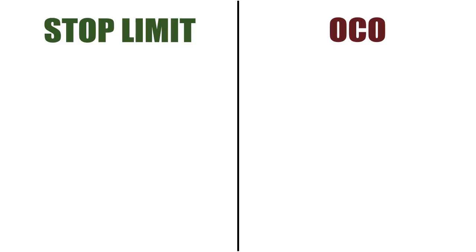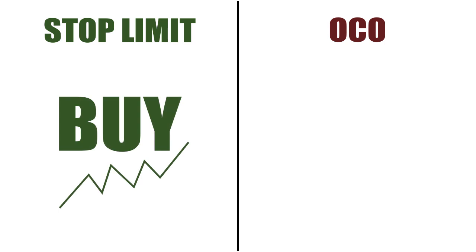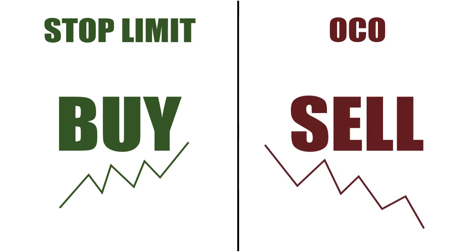The question is: which order form should you use to place your orders — the stop limit or the OCO order? I personally use both of them. If I want to enter the market and buy at a specific price, I use the stop limit order. After that, if my order gets filled, I use the OCO order form to sell my position, because I can set my profit target and my stop loss and just walk away from my computer and do other things.